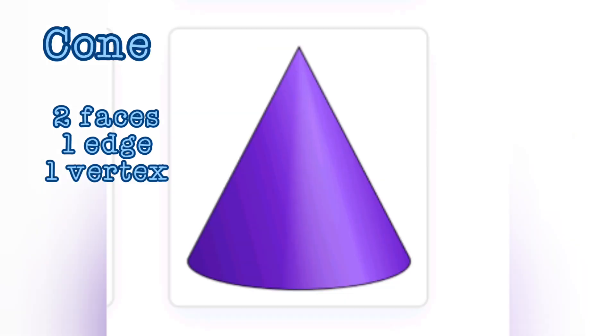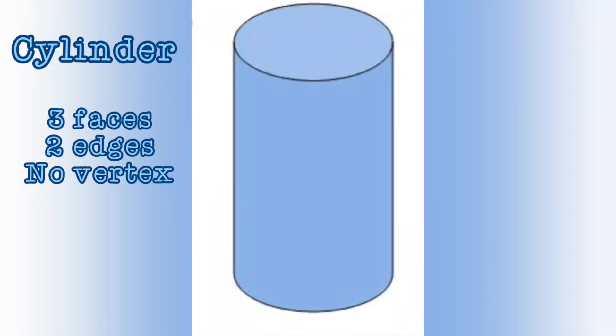This is a cone. It has 2 faces, 1 edge, and 1 vertex right at the top. This is a cylinder. It has 3 faces, 2 edges, and no vertices. One of the faces is a curved face — can you see it?